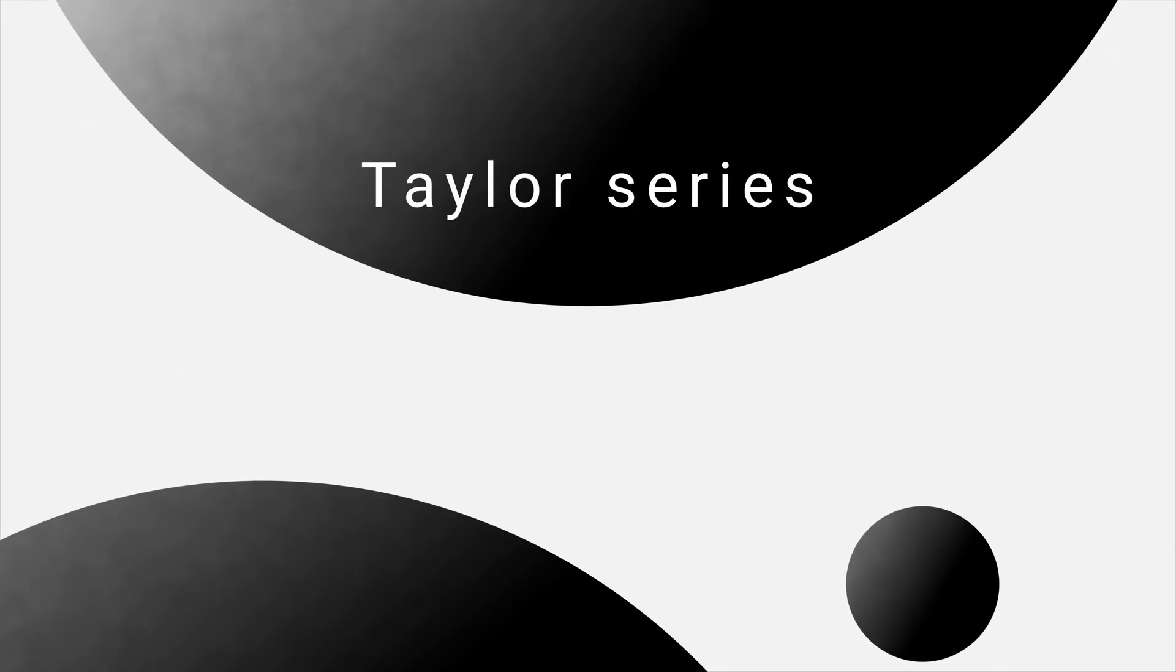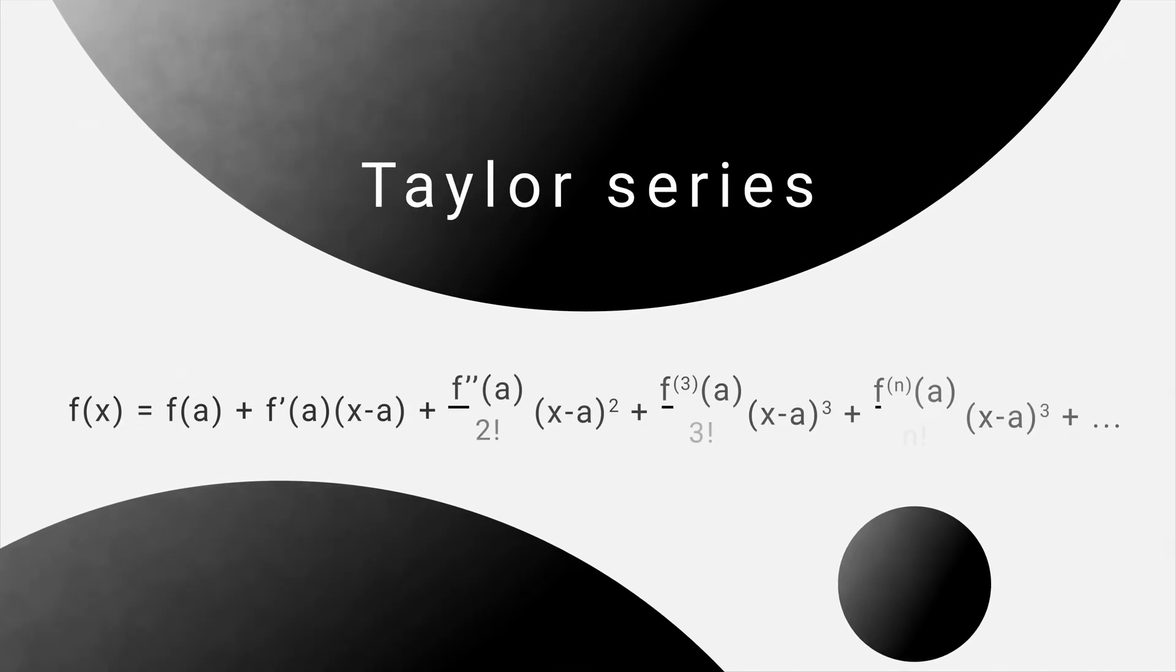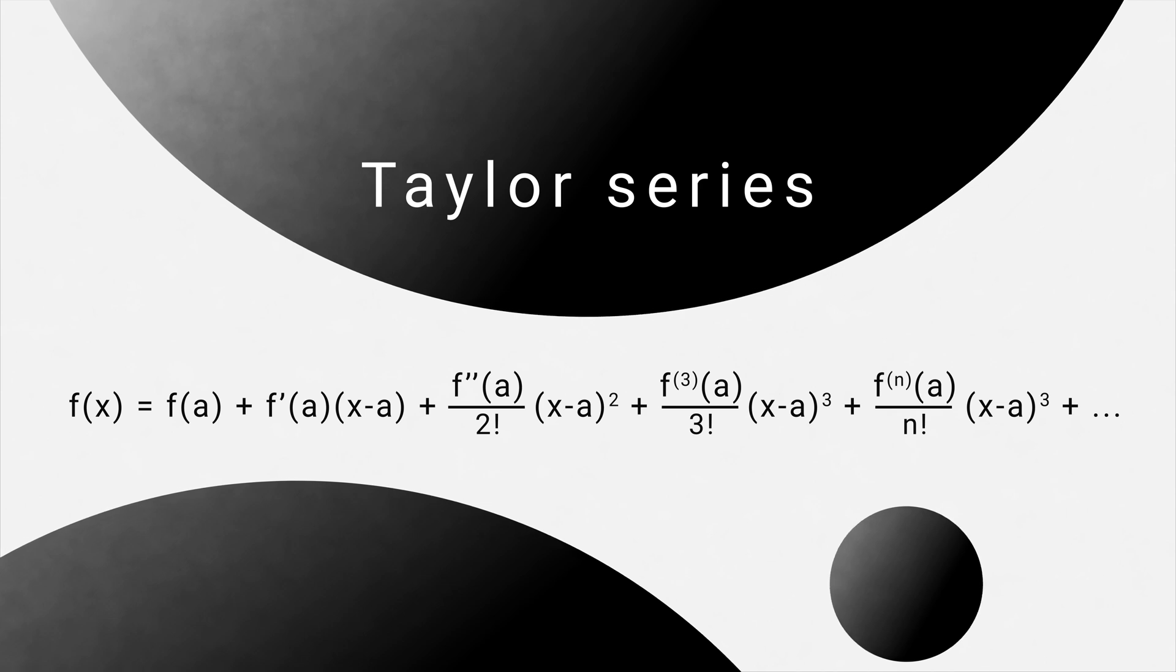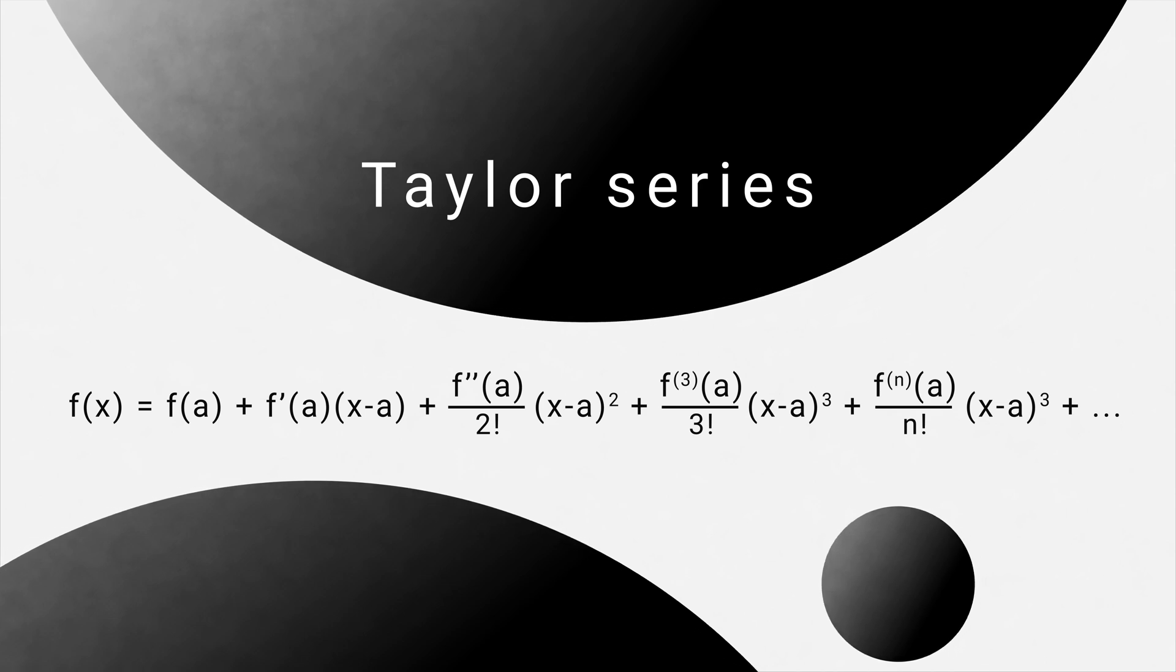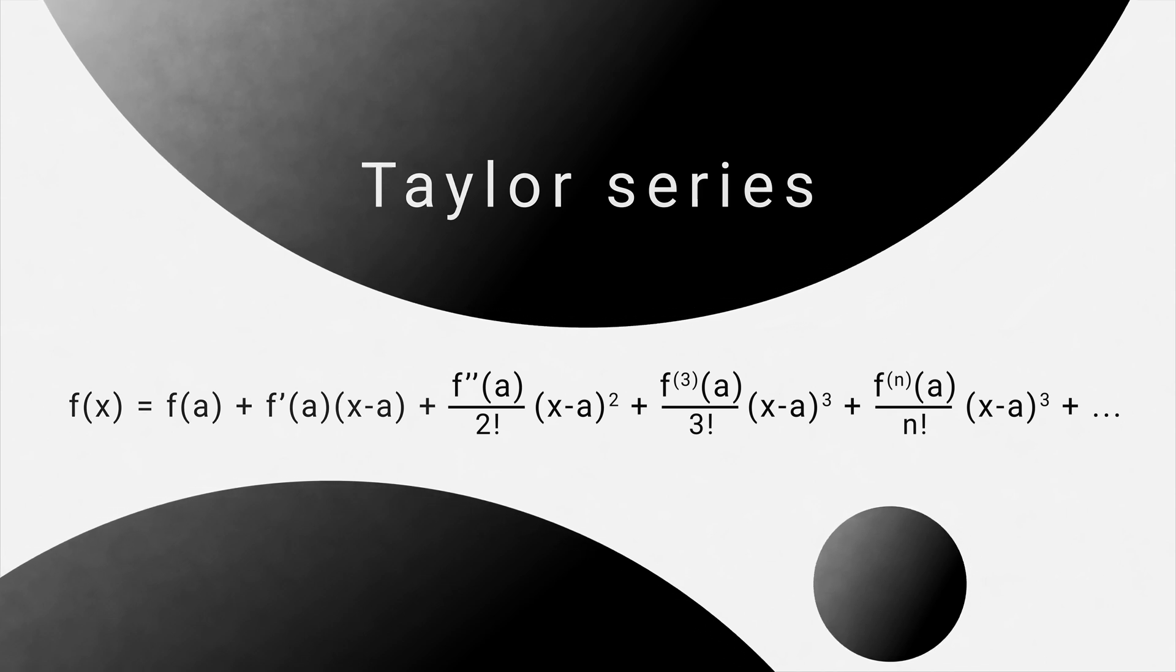The Taylor series expansion of a function is a way to represent the function as an infinite sum of terms, where each term is a multiple of a power of x. For example, the Taylor series expansion of e raised to power x, the cosine function, and the sine function can all be expressed this way.